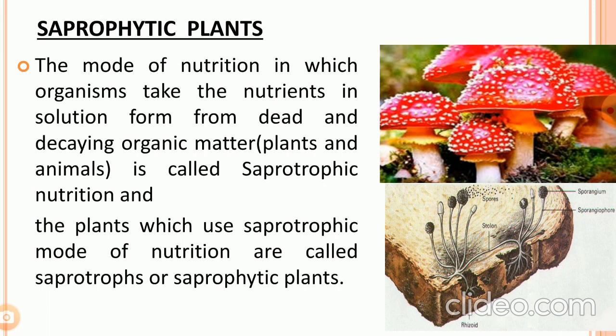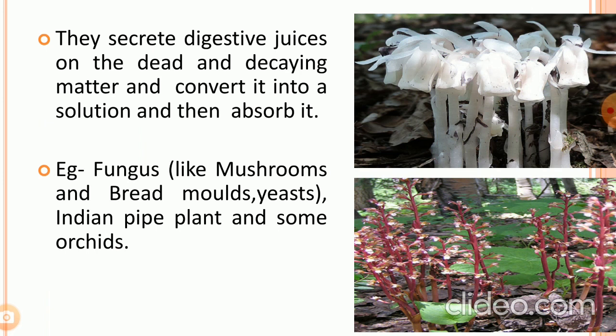The mode of nutrition in which organisms take nutrients in solution form from dead and decaying organic matter is called saprotrophic nutrition. The plants which use saprotrophic mode of nutrition are called saprotrophs or saprophytic plants. They secrete digestive juices on the dead and decaying matter, convert it into a solution, and then absorb it.